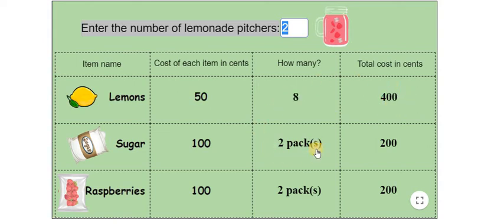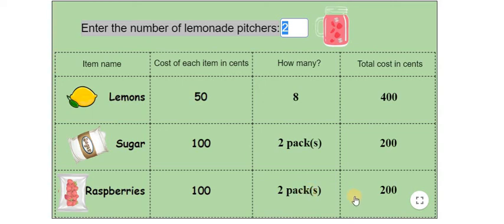When it comes to sugar, for two pitchers of lemonade we need two packs of sugar and the total cost is 200 cents. When it comes to raspberries, for two pitchers of lemonade we need two packs of raspberries and it is costing us 200 cents.